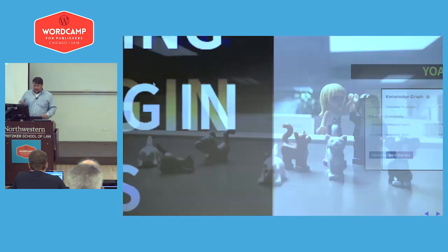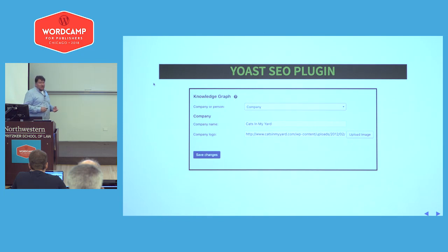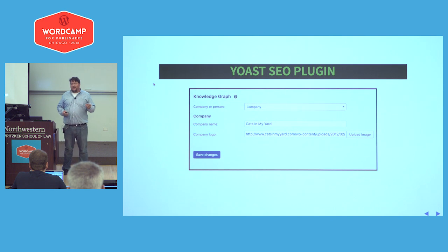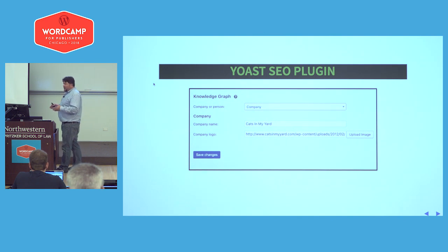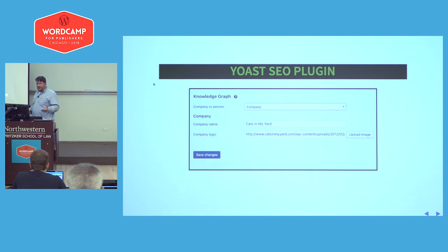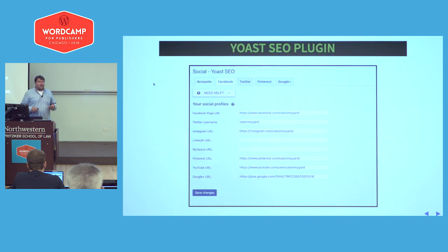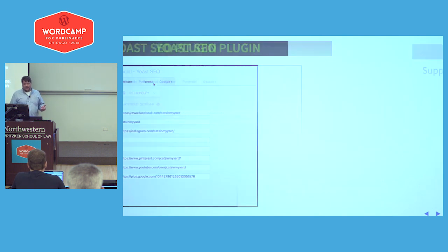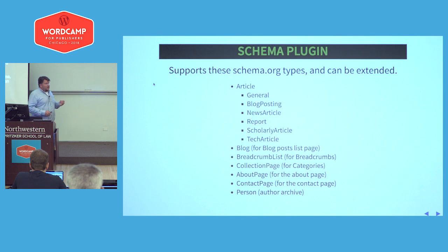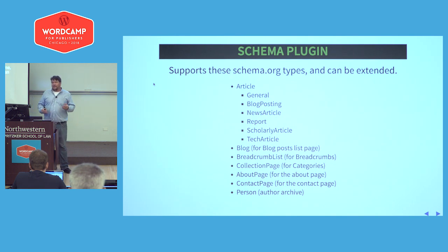Implementing schema.org in WordPress — the Yoast SEO plugin returns. You can set a lot of defaults: the things every website needs, they're all covered. You can set your company or person, company name, company logo, same-as with all your social profiles — your Facebook and Twitter information.